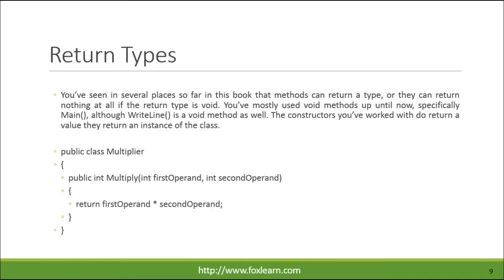Methods can return a type, or they can return nothing at all if the return type is void. You've mostly used void methods up until now, specifically main. The constructors you've worked with do return a value — they return an instance of the class.